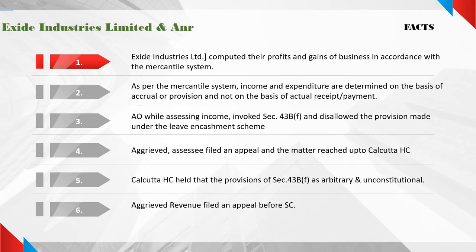Exide Industries Limited computed their profits and gains of business in accordance with the mercantile system. As per the mercantile system, income and expenditure are determined on the basis of accrual or provision, and not on the basis of actual receipt or payment. The assessing officer, while assessing income, invoked Section 43B clause (f) and disallowed the provision made under the leave encashment scheme.